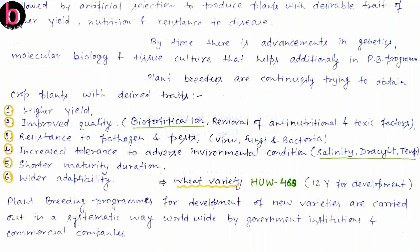Biofortification is the idea of breeding crops to increase their nutritional value, either by selective breeding or by genetic engineering. Biofortification differs from ordinary fortification because biofortification focuses on making plant foods more nutritious as the plants are growing, while in the case of ordinary fortification, nutrients are added to the foods when they are being processed. So biofortification is enrichment of plants while they are growing, while ordinary fortification is addition of nutrients after harvesting during food processing.